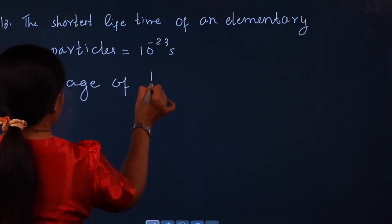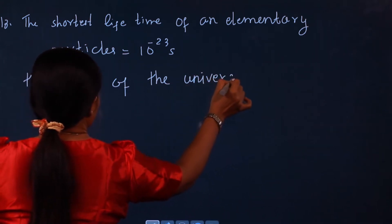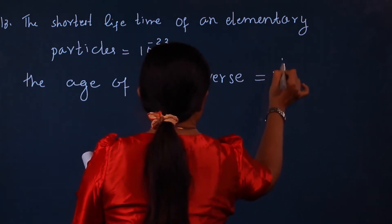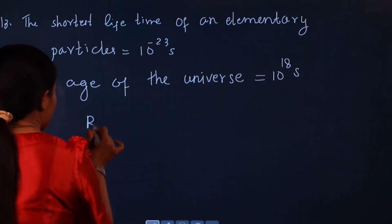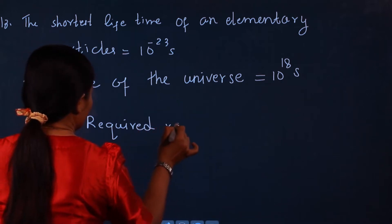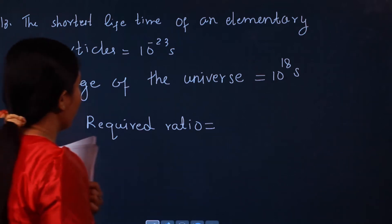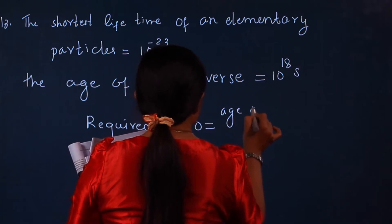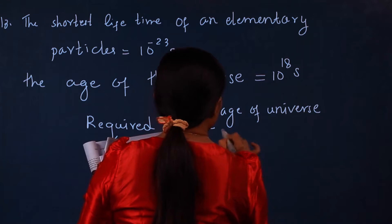The age of the universe is on the order of 10 to the power of 80 seconds. Now let's look at the power of the universe — universal scale.